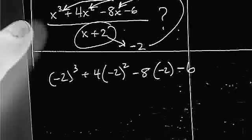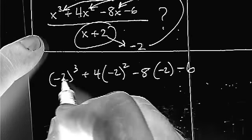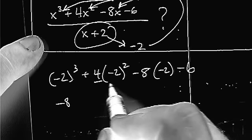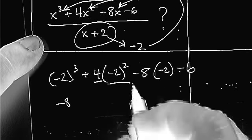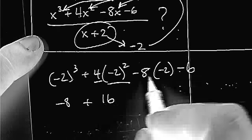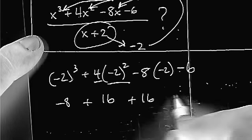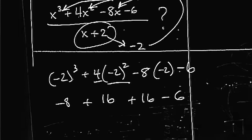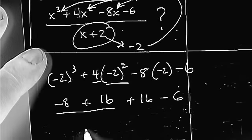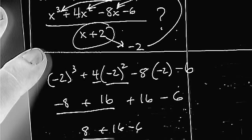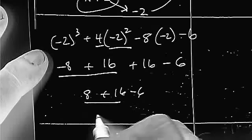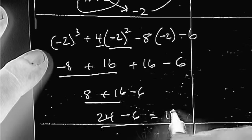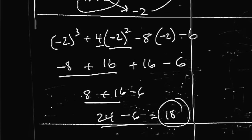That's negative 2 times negative 2 times negative 2. That's negative 8. 4 times 4, because we know that 2 squared is 4. So, that's 16. Negative 8 times negative 2 is positive 16, and then minus 6. So, negative 8 and 16 is 8. 8 and 16 is 24. 24 and 16 is 18. That is the remainder.